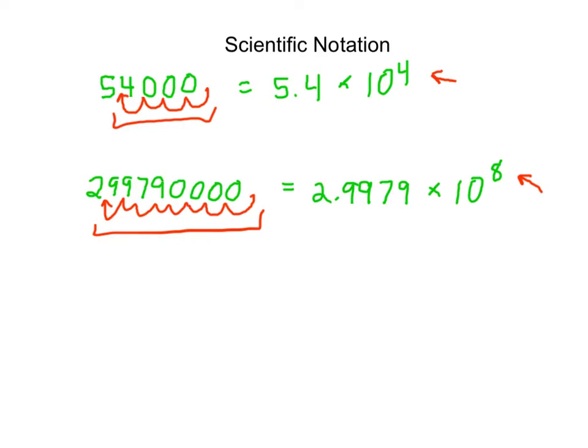To convert a number from scientific notation into regular or decimal notation, move the decimal place back the other way, adding placeholder zeros if necessary. In this case, my decimal started out right here, and I need to move it over 5 spaces. 1, 2, 3, 4, 5. And so to fill in those empty spots, I'll need 1, 2, 3 placeholder zeros.